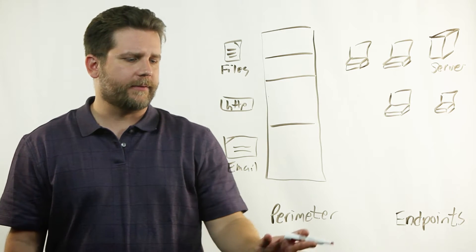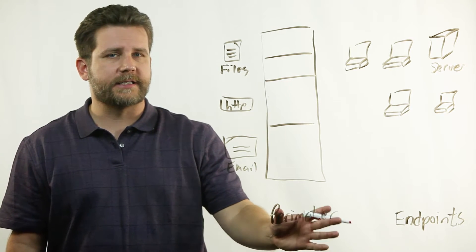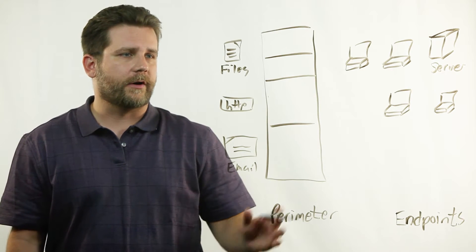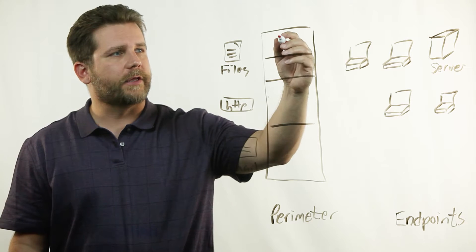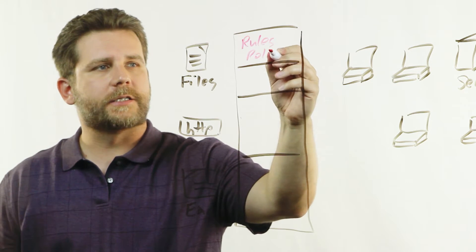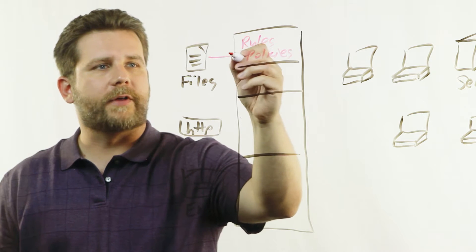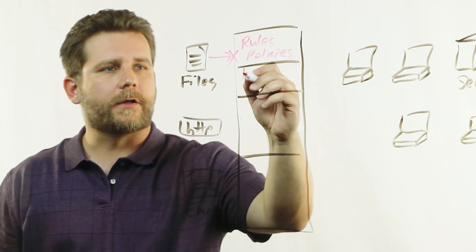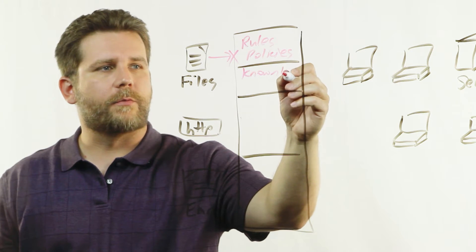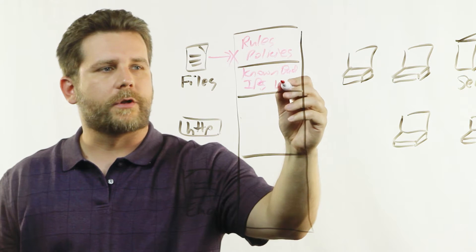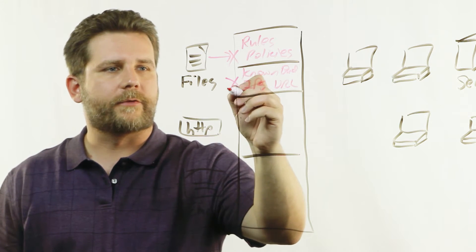So the first kind of general products I want to talk about is these types of perimeter protection products. They'll do things like firewalls or variations of firewalls that will keep sets of rules or policies to prevent certain traffic from coming through. They also look for known bad traffic, whether it be IPs or URLs that they prevent from coming in.